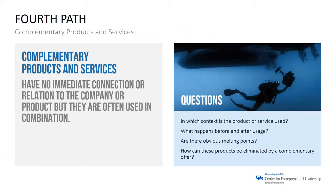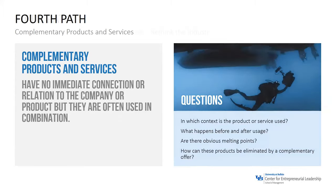Another path is to look at complementary products and services — things with no immediate connection to your company or product, but often used in combination. In the B&B industry, where else might the product be used? Could it be corporate events? Instead of looking at traditional hotels, maybe you'd look at corporate events as a complementary product that needs the B&B, and find points where the two industries begin to melt together.